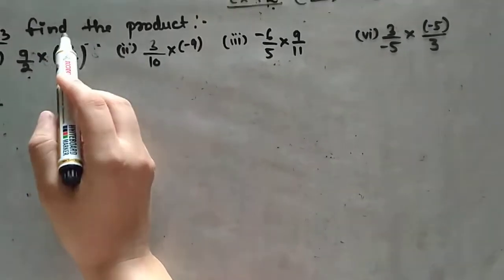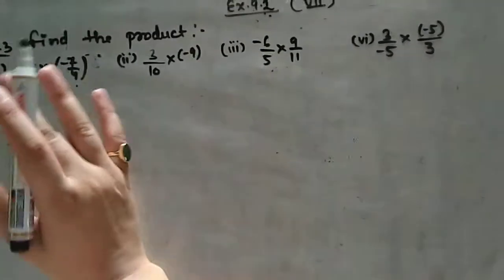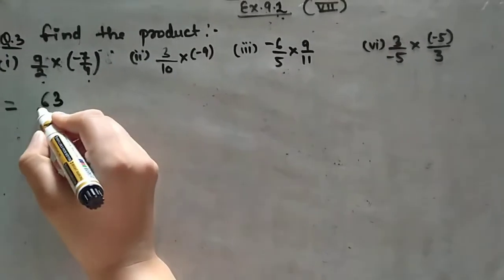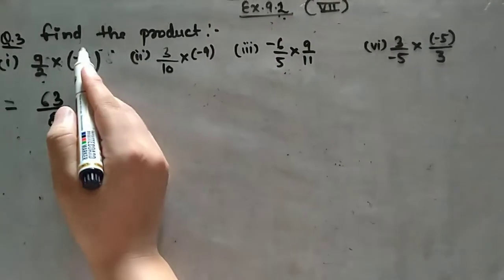So 9 times 7 is 63, and 2 times 4 is 8. With the negative sign, the answer is minus 63 upon 8.